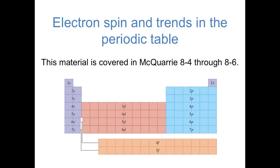Hi everybody. In the previous video, we thought about how to take everything that we know about the hydrogen atom and extend it to at least approximately solve for the wave functions and energies of a multi-electron atom. In this video, we're going to introduce one more concept, the idea of electron spin, and then use that to build up the trends in the periodic table that we've probably seen in general chemistry.